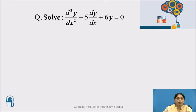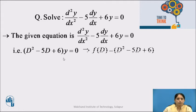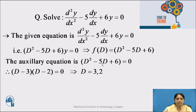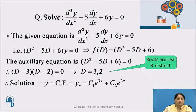The given equation is d²y/dx² − 5 dy/dx + 6y = 0. Expressing it with operator D: (D² − 5D + 6)y = 0, so f(D) = D² − 5D + 6. The auxiliary equation is D² − 5D + 6 = 0, giving (D − 3)(D − 2) = 0, so D = 3, 2 — real and distinct roots. Therefore, the complementary function is yc = c₁e^(3x) + c₂e^(2x).